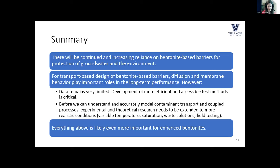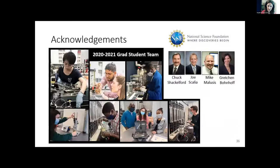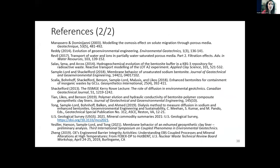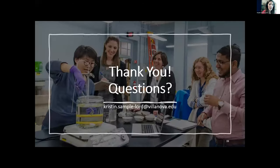In summary: there is continued and increasing reliance on bentonite-based barriers for the future. Diffusion and membrane behavior are really important but data is limited — we need more accessible testing methods to really move forward in having diffusion and membrane efficiency commonly considered in barrier design and prediction. We also need to consider real-world conditions: variable temperatures, unsaturated conditions, different waste solutions, and field-exhumed samples. Everything above is even more important for enhanced bentonites, so there's a wide open research area there as well.